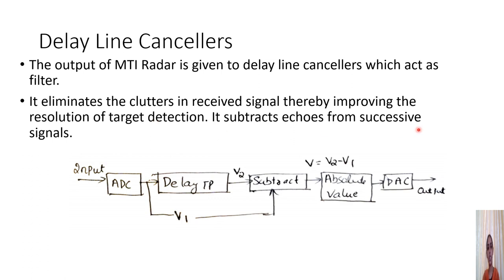The delay line canceller subtracts echoes from successive signals. The MTI radar output is given to an analog-to-digital converter, which converts it to a digital value, then subjected to a delay equal to one pulse repetition time period TP, or equivalently 1/FP. A subtractor circuit subtracts the original value from the delayed value. This difference value is free from echo signals, converted to an absolute value, then passed through a digital-to-analog converter for display.